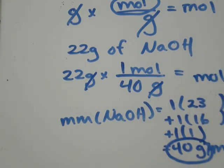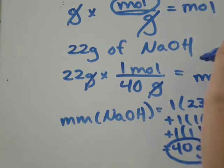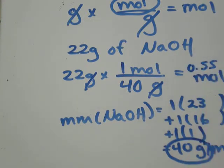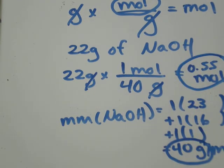So when I go 22 divided by 40, I get 0.55 moles. So if you have 22 grams of NaOH, that's equivalent to having 0.55 moles.